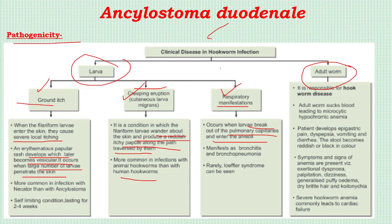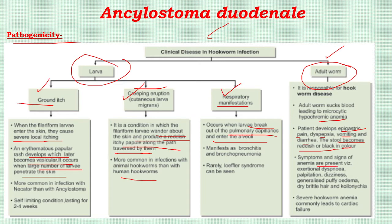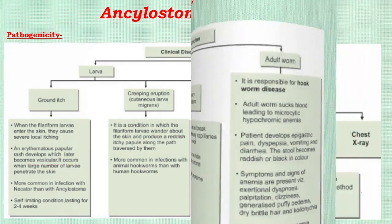Pathogenicity caused by adult worms: adult parasites suck blood, leading to microcytic hypochromic anemia. The patient develops epigastric pain, dyspepsia, vomiting, diarrhea, and stool becomes reddish and black in color. Severe hookworm anemia can commonly lead to cardiac failure.